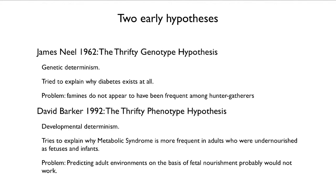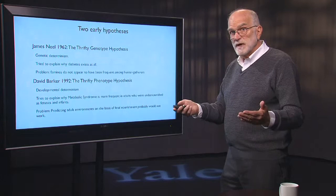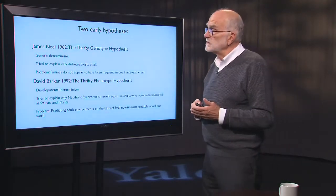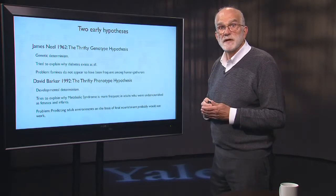David Barker modified that idea in 1992 with a thrifty phenotype hypothesis. It wasn't genetic determinism this time — it was developmental determinism. He was trying to explain why metabolic syndrome is more frequent in adults who were undernourished as fetuses and infants. The problem with an adaptive explanation is that predicting adult environments on the basis of fetal nourishment probably wouldn't work, but this predictive adaptive response idea has been resurrected with epigenetic mechanisms as evidence.